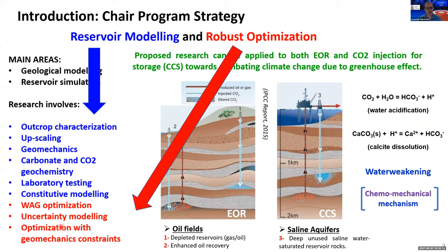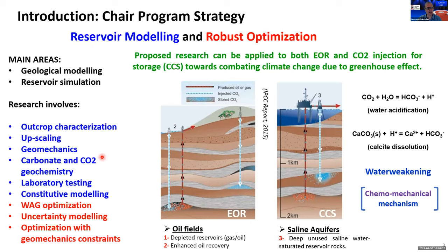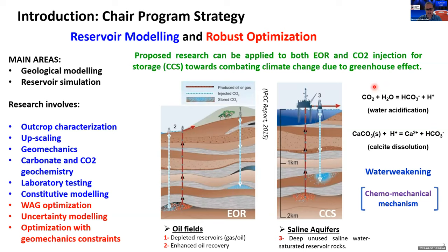We are addressing problems related to IOR/EOR, but also we think the proposed research can be applied to CO2 injection for storage in CCS projects. We are really interested in studying what happens in a carbonate reservoir when we have injection of CO2, then water acidification and mineral dissolution of calcite and dolomites that will change the porosity and permeability of the porous rock, but also will affect the strength and stiffness of the material — the so-called 'water weakening' phenomena.